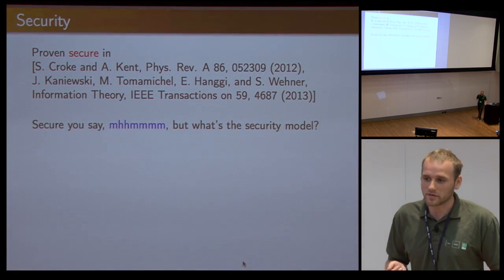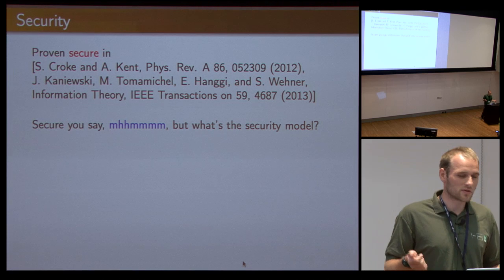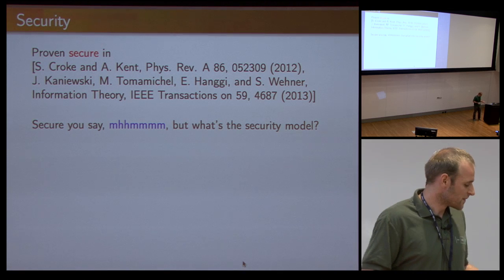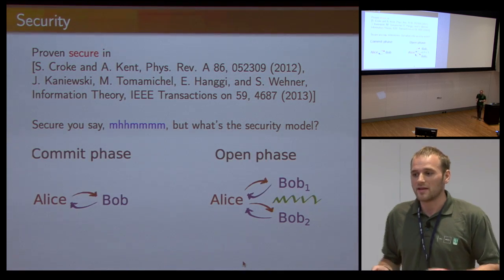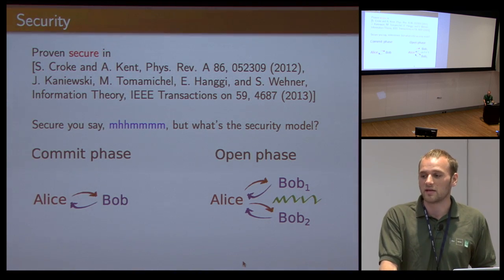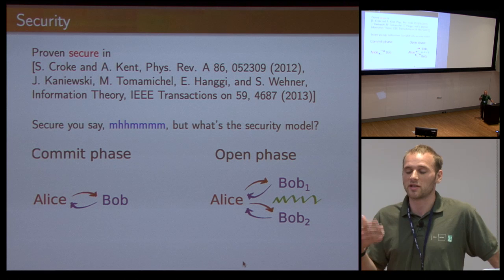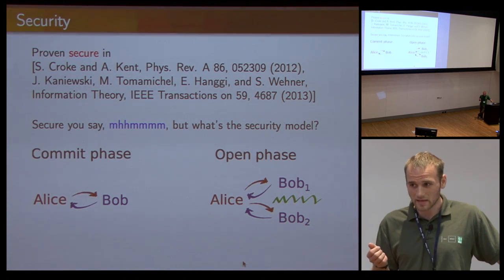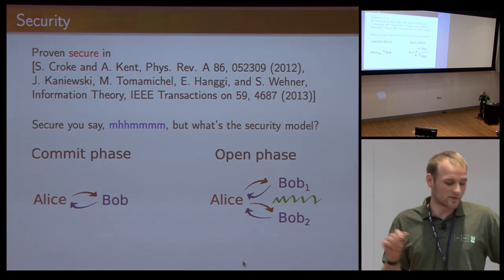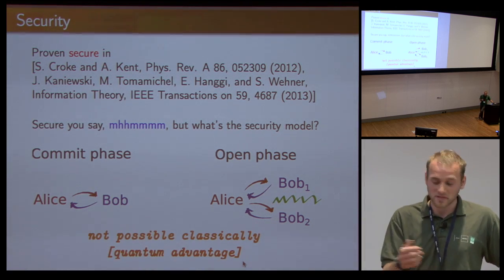You can prove security of this and there are proofs in our paper about this. But when I say secure, you should ask what's the security model or more importantly, what is the minimal assumption that you need for security. This turns out to be a fairly interesting question. The minimal assumption is that there are two Bobs in the open phase. The only thing you actually need is that Alice can challenge two agents of Bob independently such that they cannot collaborate in the open phase. In this particular model, this minimal split model, there is a quantum advantage. Classically you cannot do anything, but quantumly you can.